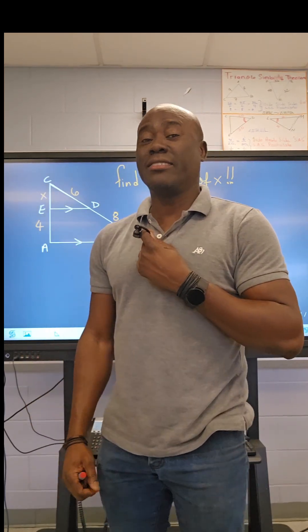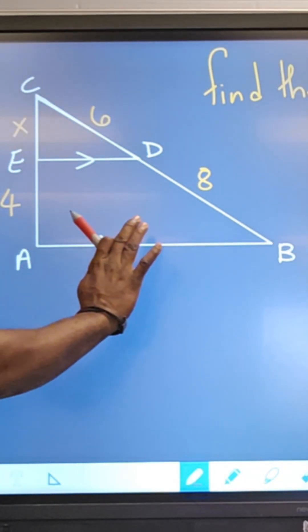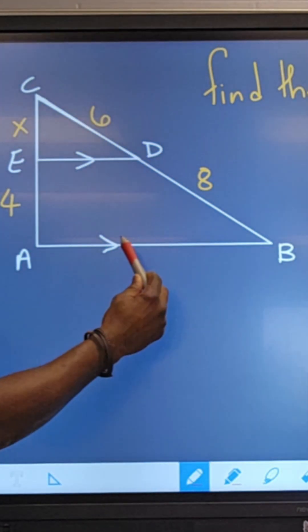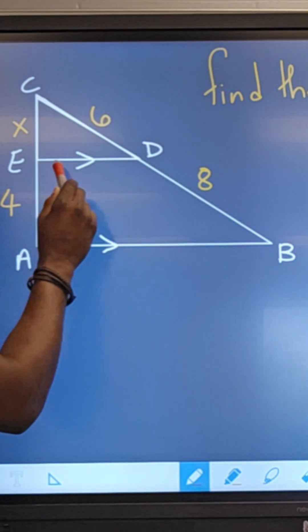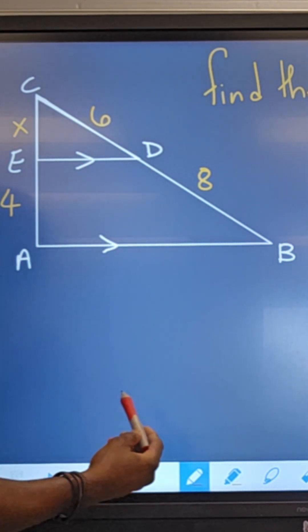Welcome back to Dalymas Concepts. Today we're looking at similar triangles. Let's get into it. So here we have two triangles and we got some information here that this side here AB is parallel to EB, and what that means is that this angle here would be corresponding with this angle.